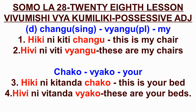Possessive adjective number four: changu (singular) and vyangu (plural). Sentence one: hiki nikiti changu — this is my chair. In the plural we say: hivi niviti vyangu — these are my chairs. The plural of hiki is hivi, and the plural of changu is vyangu. It's very easy.